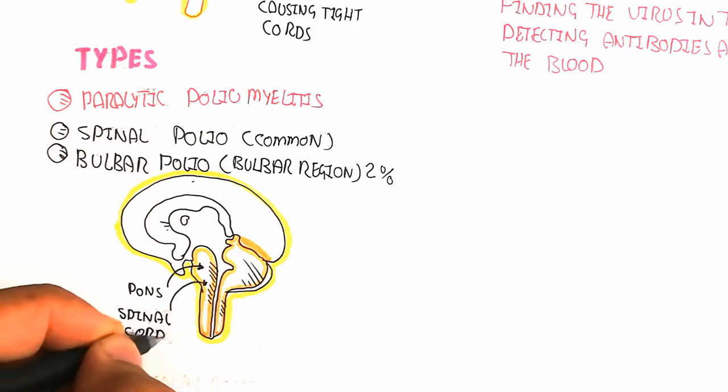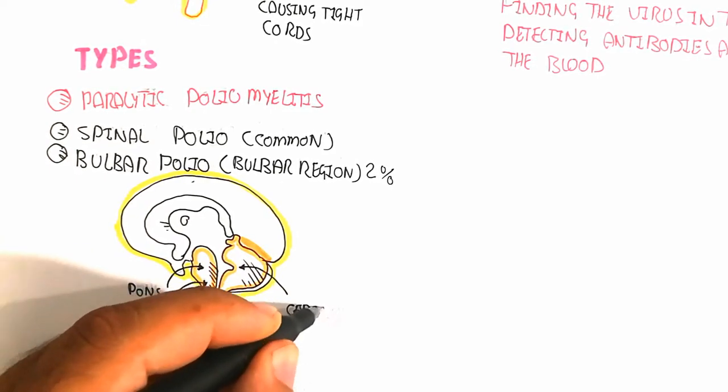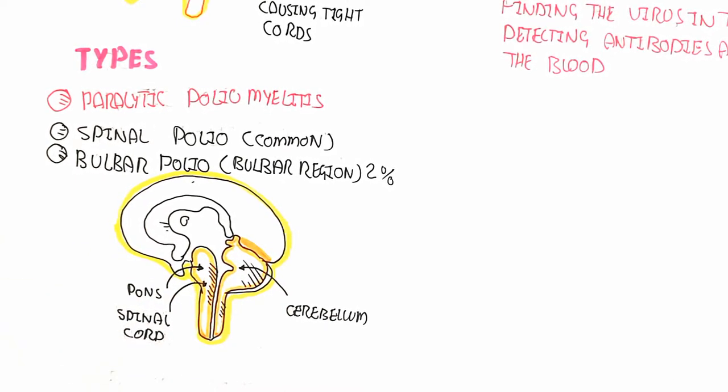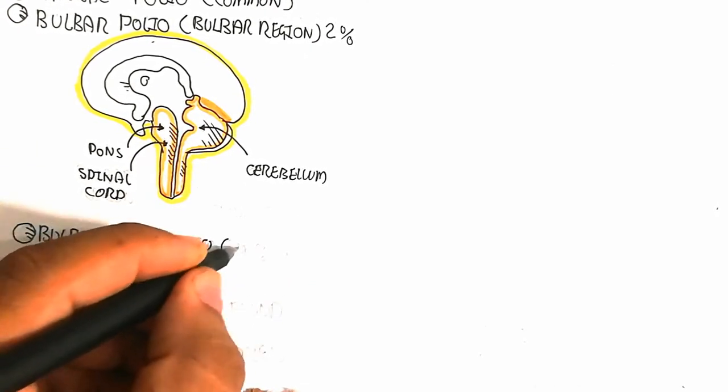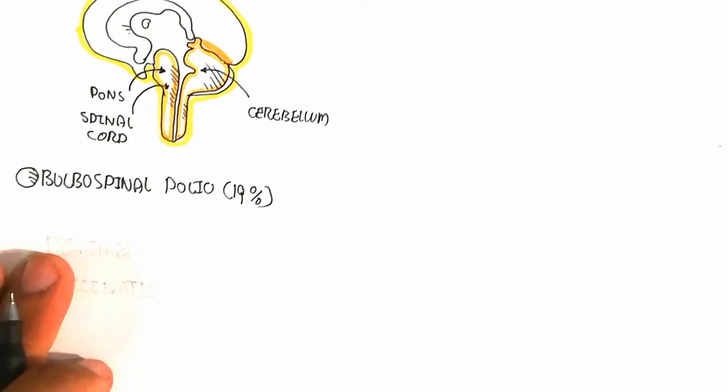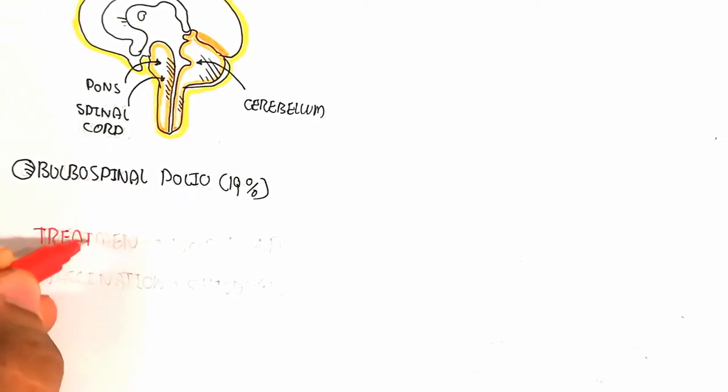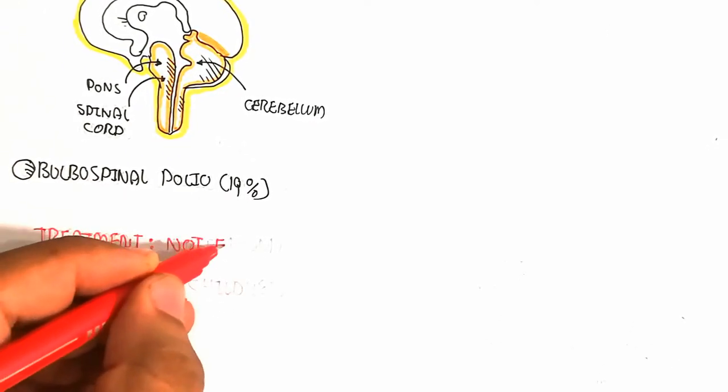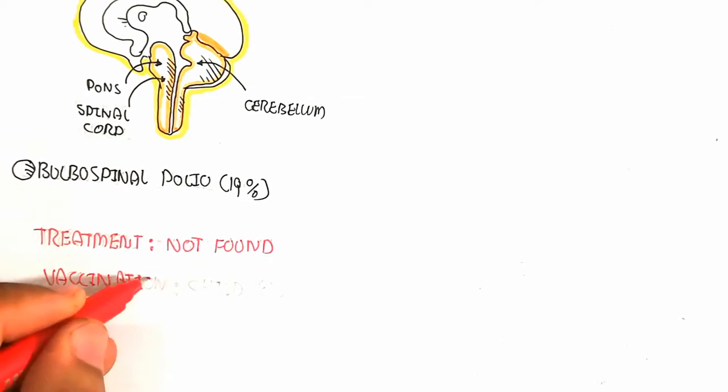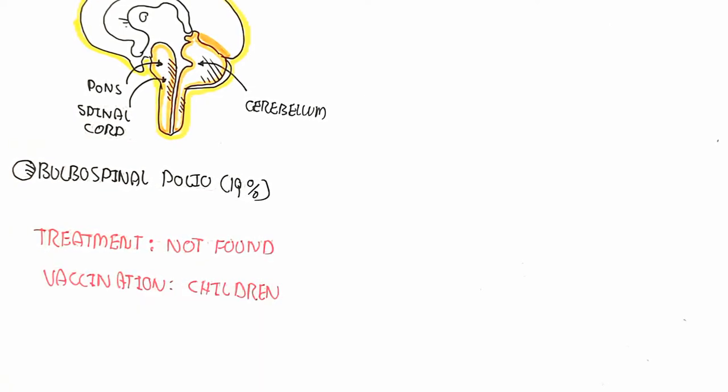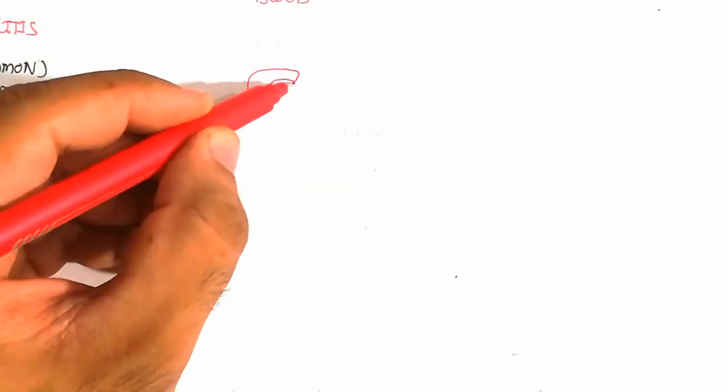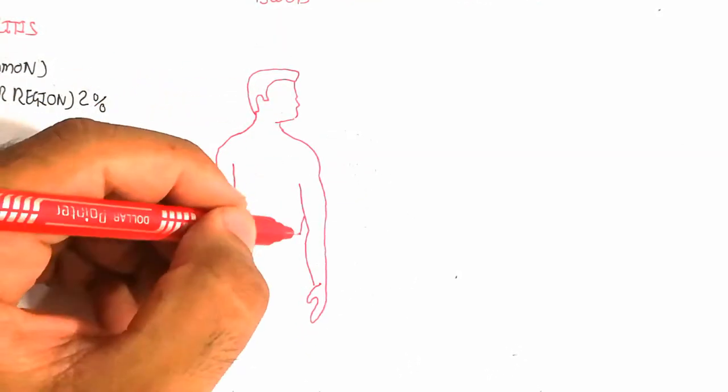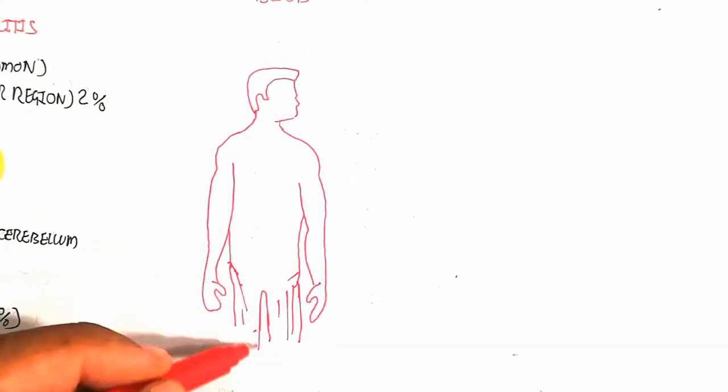Bulbospinal polio is 19%. Treatment is not found after infection, but vaccination is the prevention for children to prevent this disease and infection.